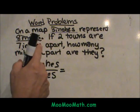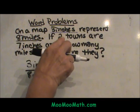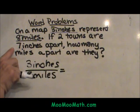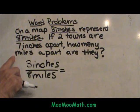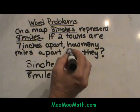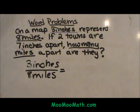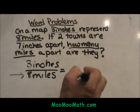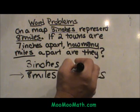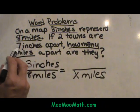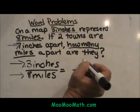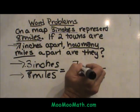If two towns — now notice the two, we don't need that two, it is just part of our story problem. If two towns are seven inches apart, how many miles apart are they? The question is asking about how many miles, so that is my unknown. Notice that miles are on the bottom, so that is where my unknown X is going to be: X miles. And on top I am going to place my seven inches, because inches are the units on the top of the fraction. So I set up seven inches over X miles.